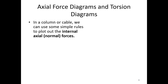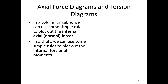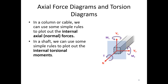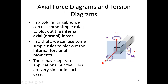In a column or cable we can use some simple rules to plot out the internal axial or normal forces. In a shaft we can use simple rules to plot out the internal torsional moments. The normal forces are forces along the axis of the beam — tension or compression — and the torsion is the moment about that same axis. Both of these have separate applications but the rules in each case are very similar, so we're going to talk about them together.